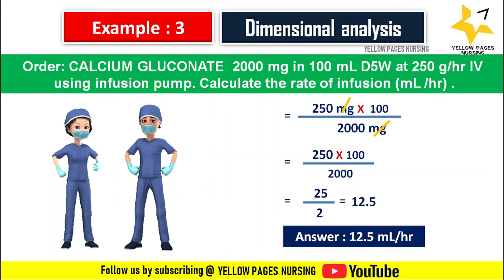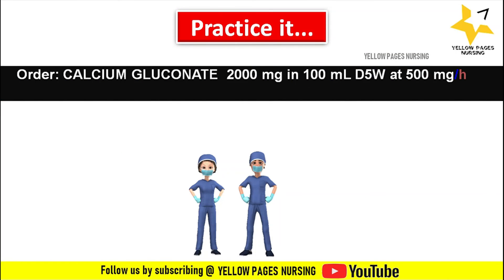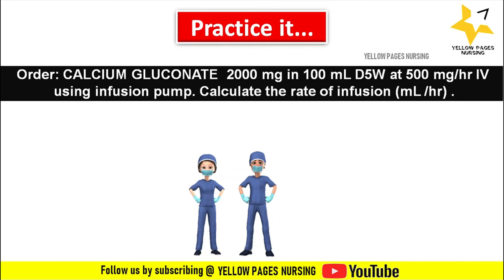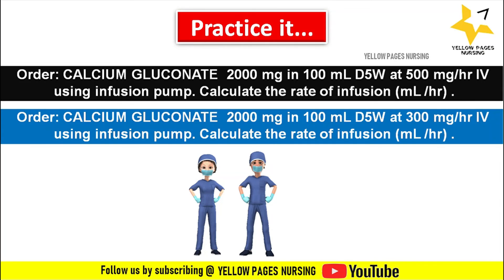A few examples for your practice. First: doctor's order calcium gluconate 2000 mg in 100 ml D5 water at 500 mg per hour IV using infusion pump — calculate the rate of infusion in ml per hour. Second: doctor's order calcium gluconate 2000 mg in 100 ml D5 water at 300 mg per hour IV using infusion pump — calculate the rate of infusion in ml per hour.